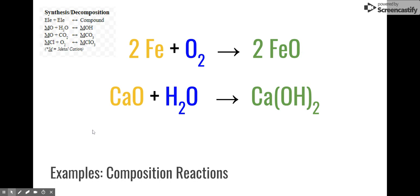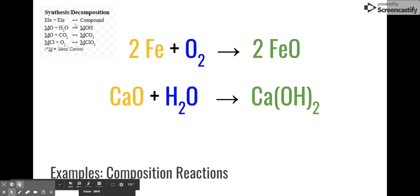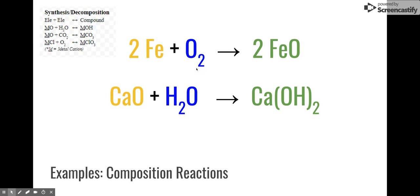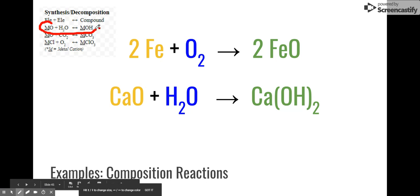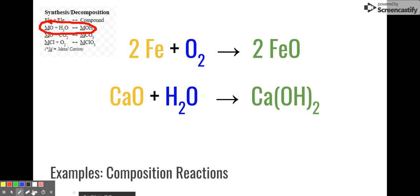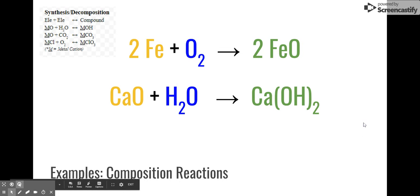Here's an example with a piece of the periodic table in the upper left-hand corner. Two irons plus oxygen gives us two iron oxides. We have iron as one reactant, oxygen as another reactant, and that gives us iron oxide — that's element plus element making a compound, the simplest type of synthesis reaction. The other example is calcium oxide plus water gives us calcium hydroxide. So we're not just smashing together elements; we might be smashing together compounds. That's a metal oxide and water coming together to make a metal hydroxide. These are called synthesis or composition reactions — two things coming together to form one new thing.